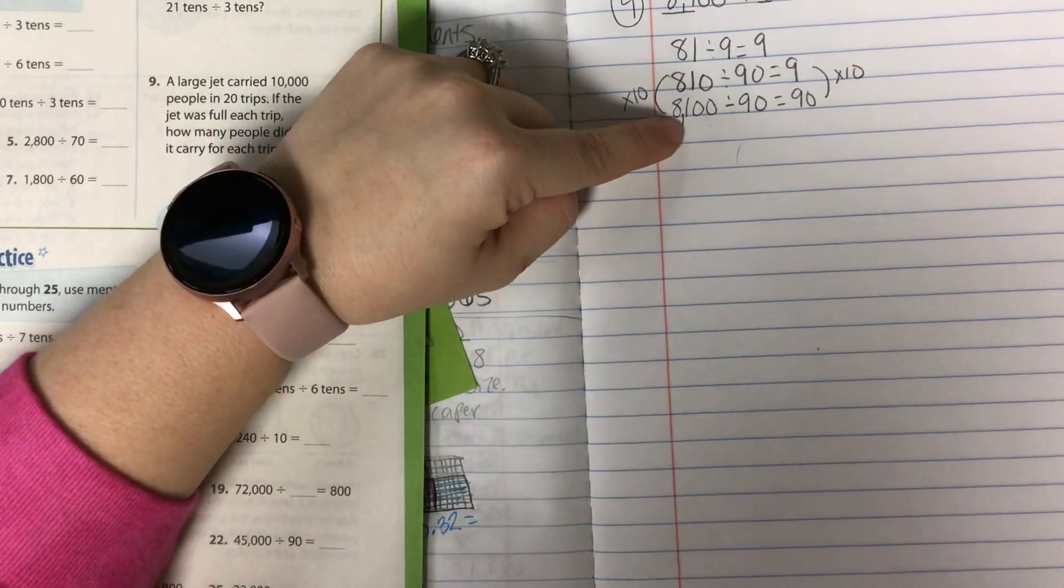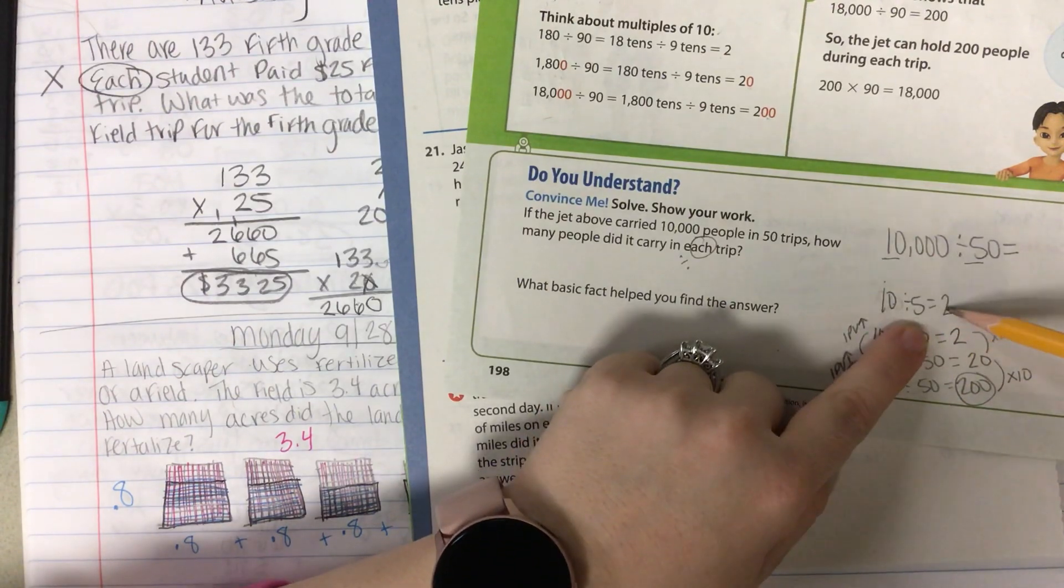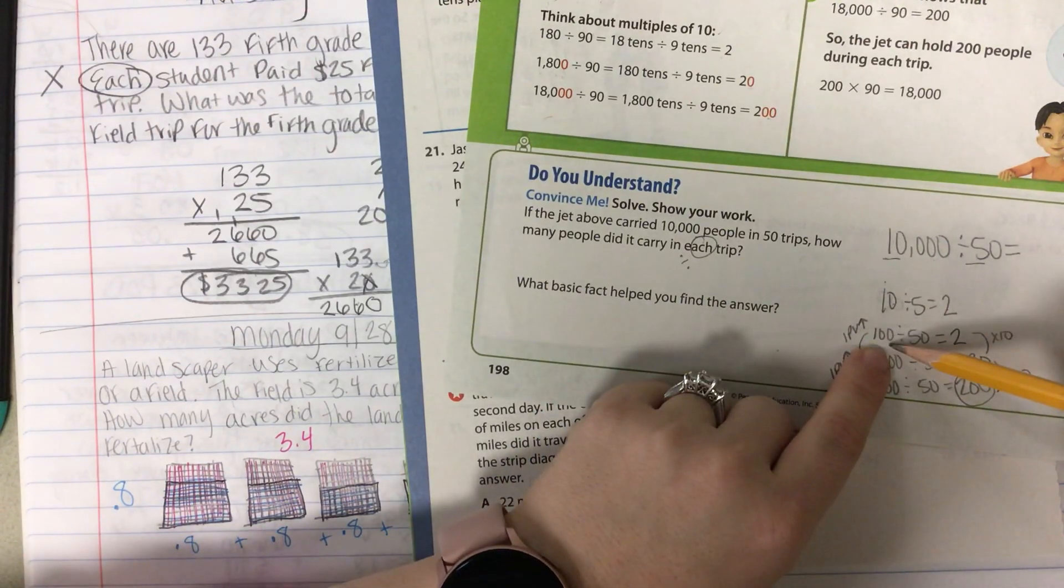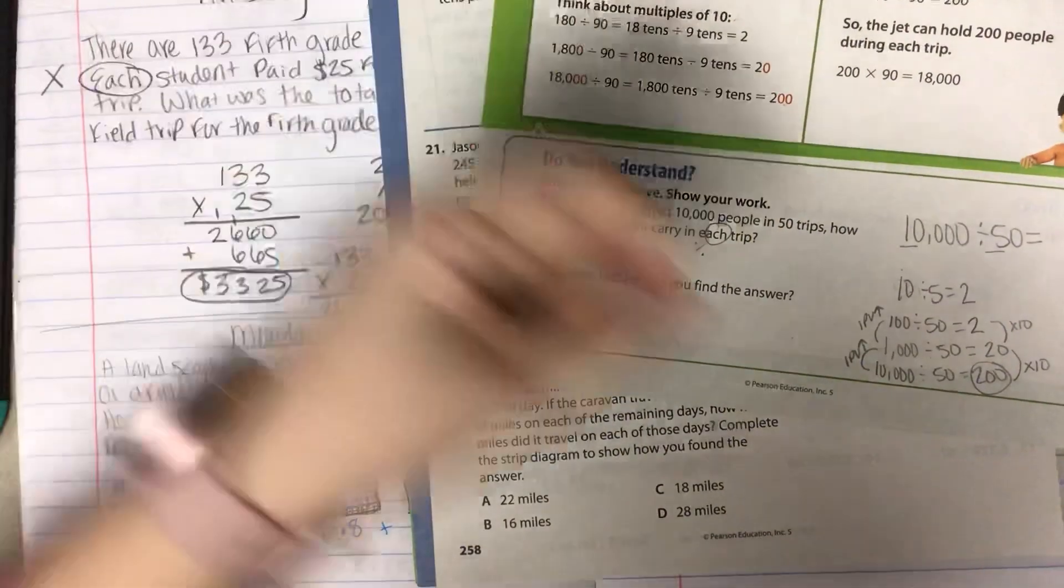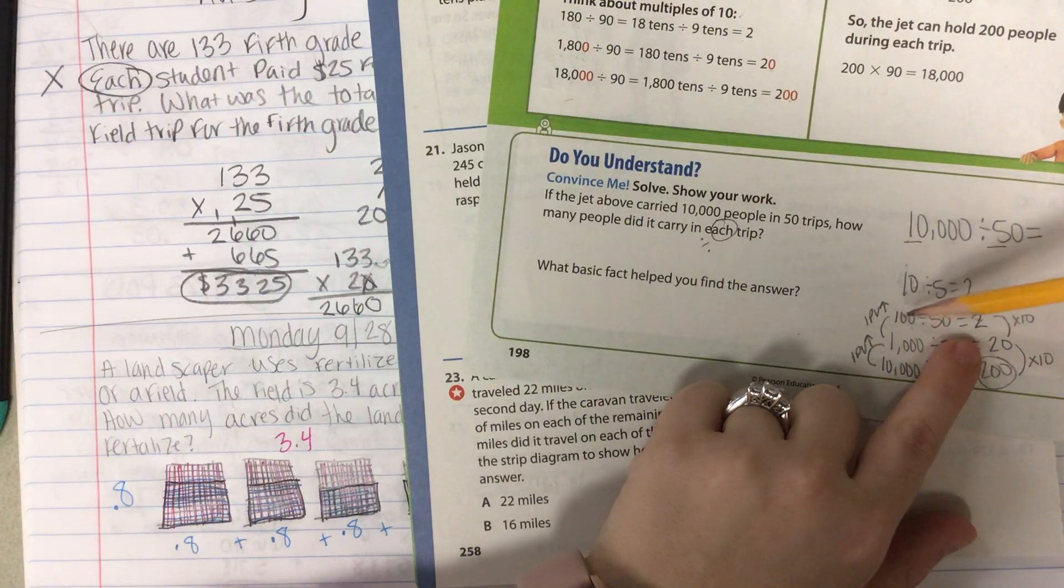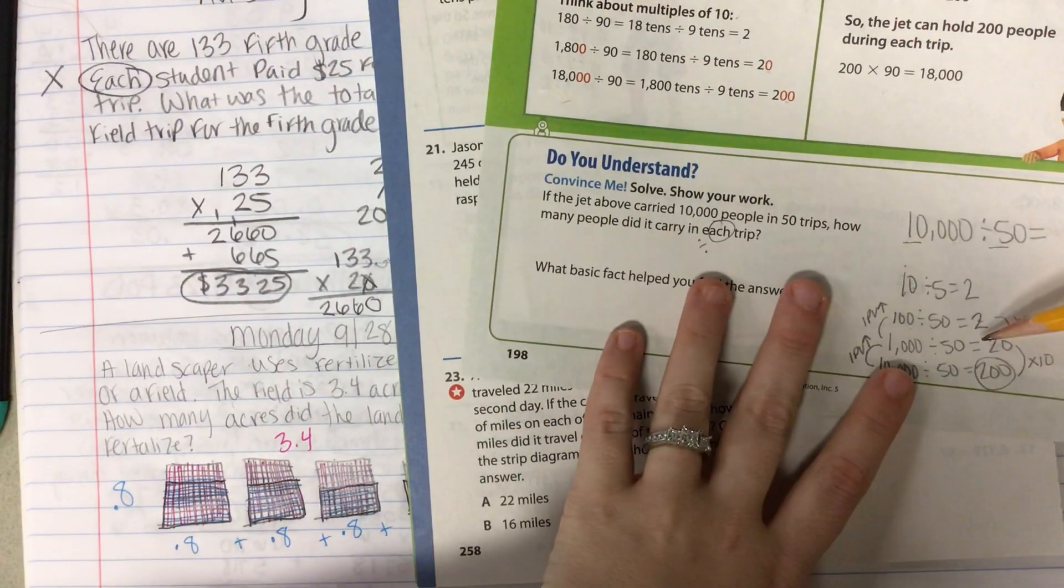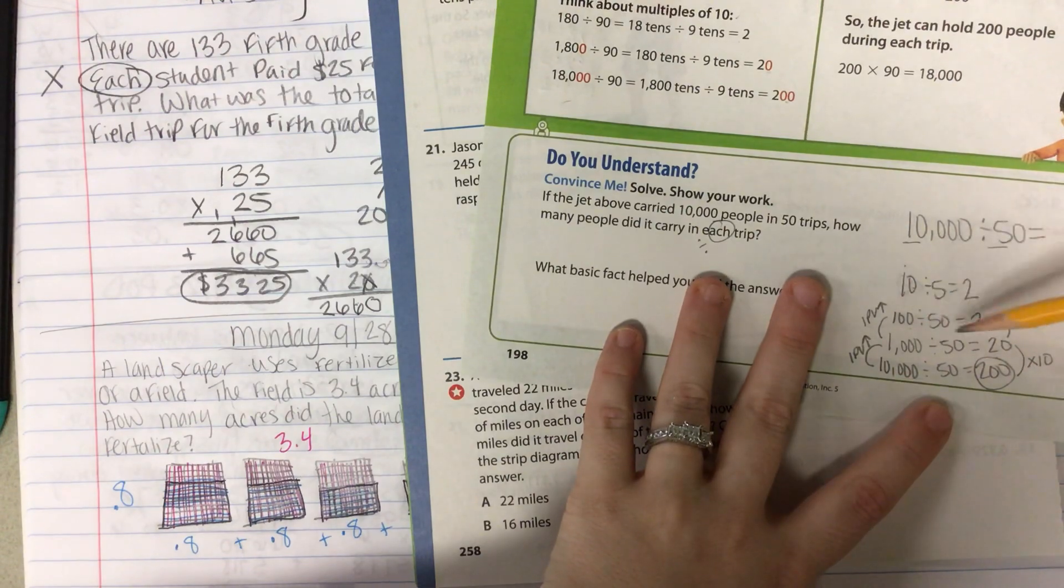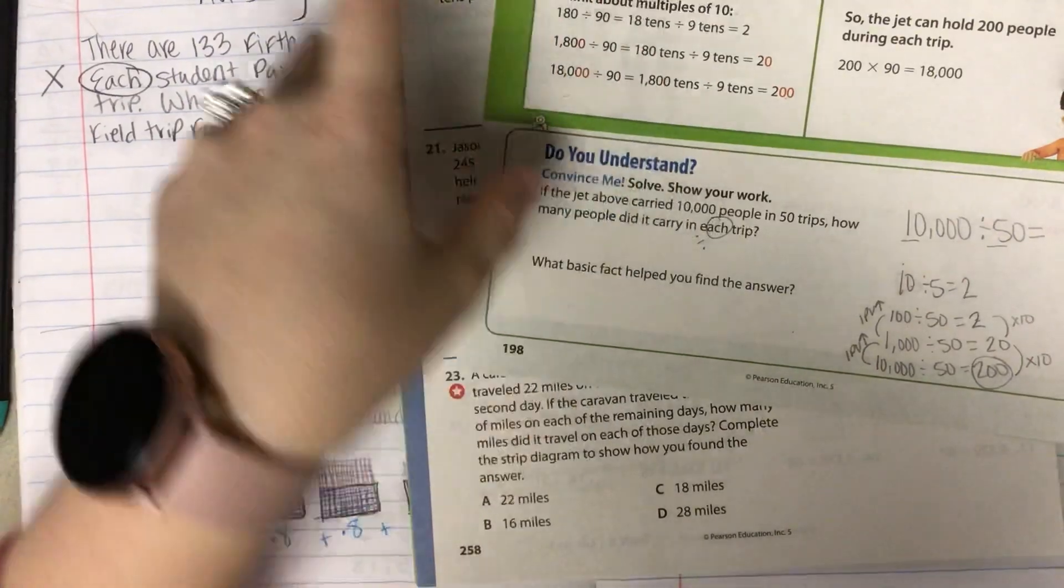It's the same thing as when we were doing this one over here. If you did 10 apples and you put them in five groups, you get two. Well, if I had 100 apples and I put them in groups of 50, 50 plus 50 is 100. So that's still two. We didn't get 10 times larger on just one number. We did it on both numbers. Therefore, your answer stays the same. So it only multiplies by 10 in your answer if you multiply by 10 on one of your divisors, not both of them.